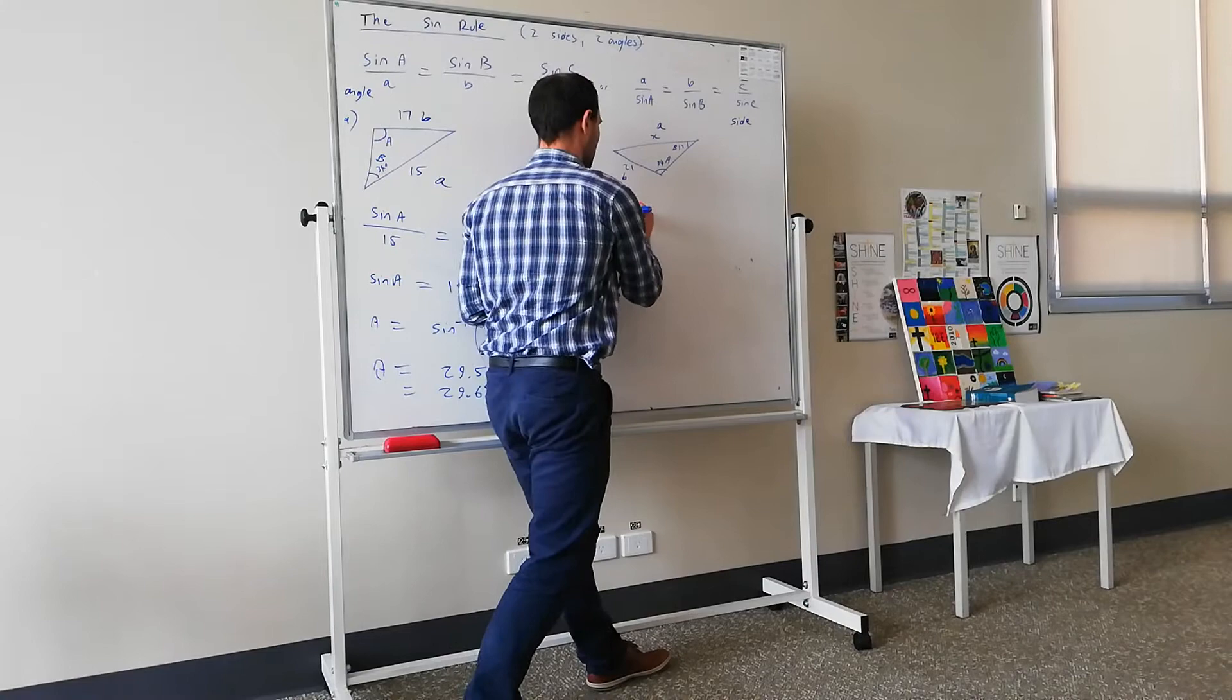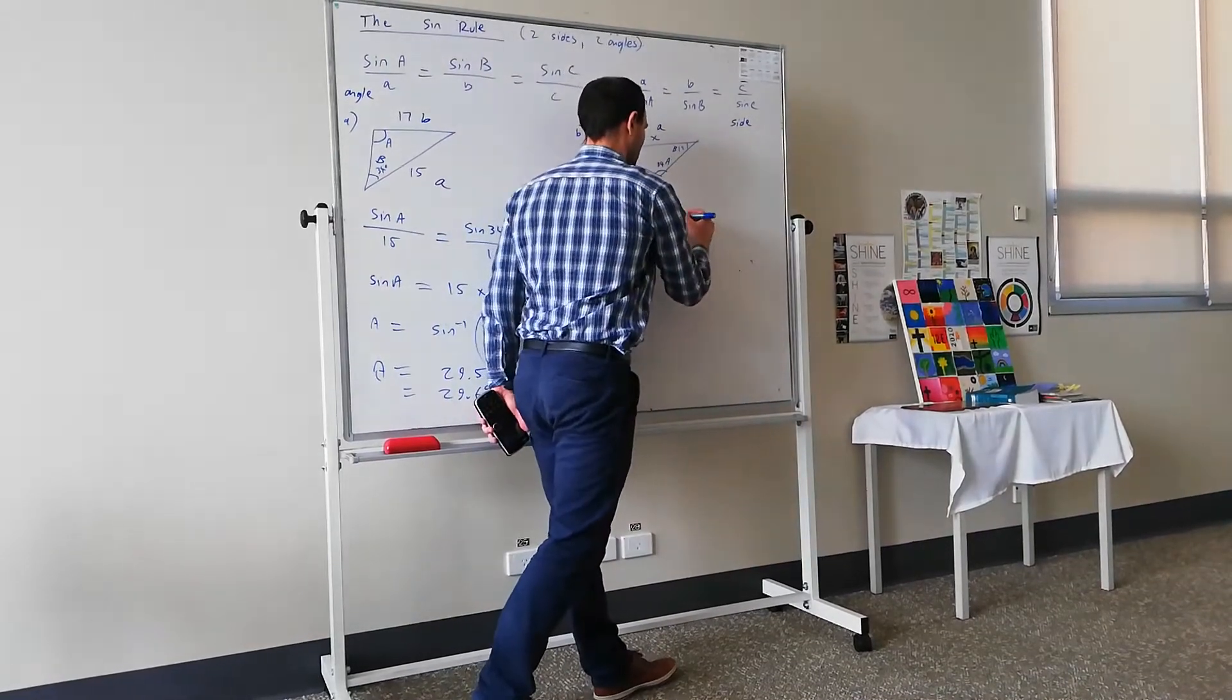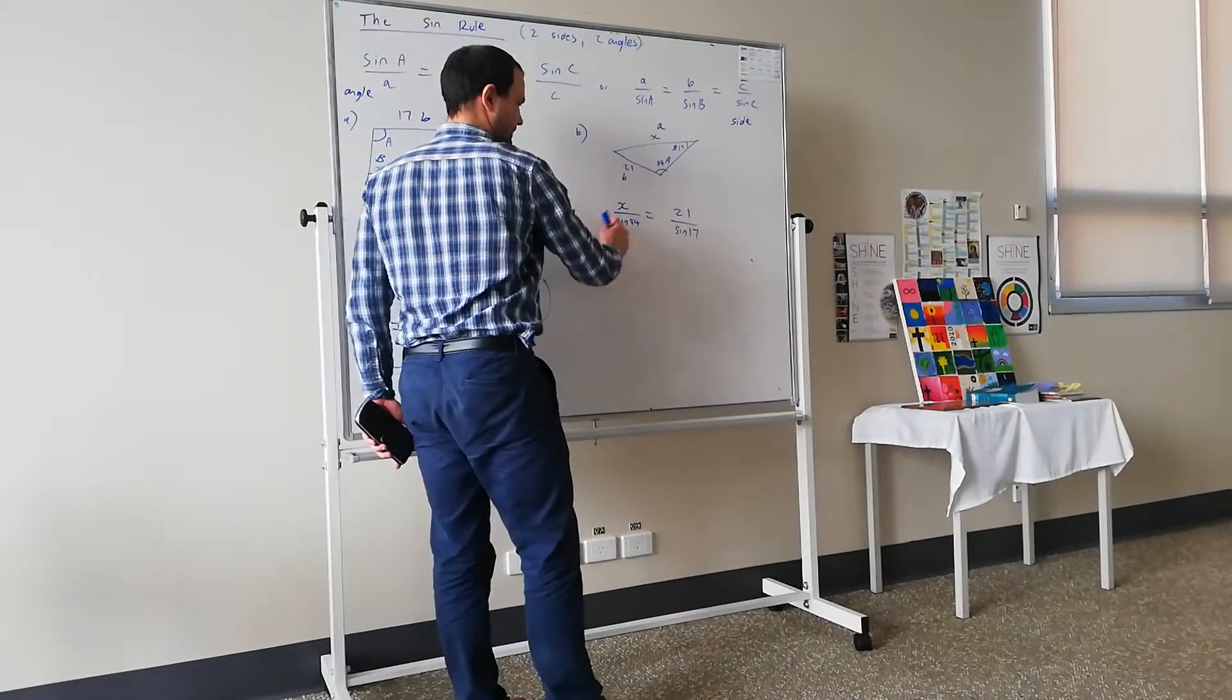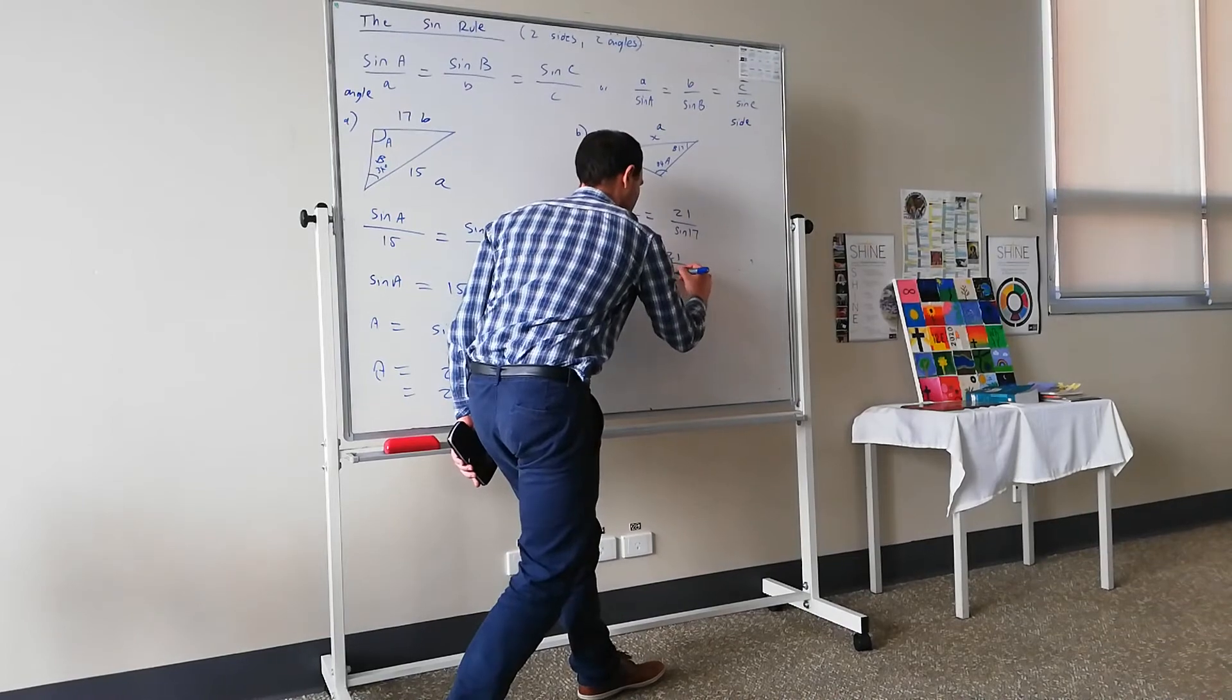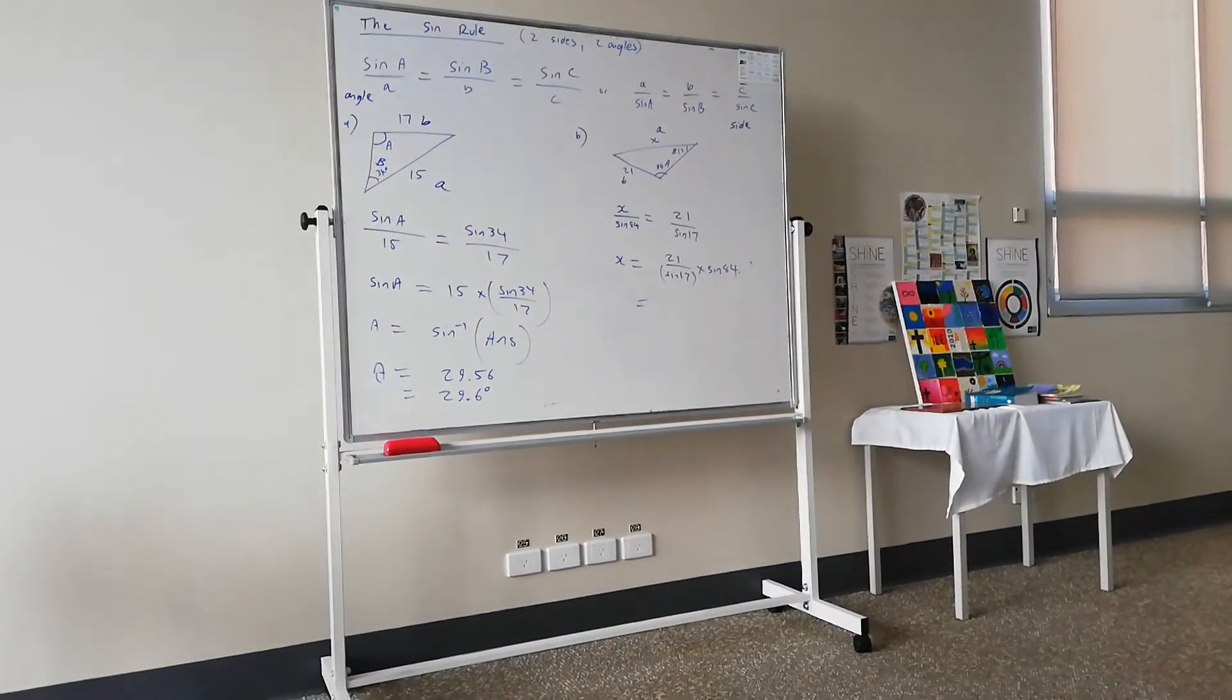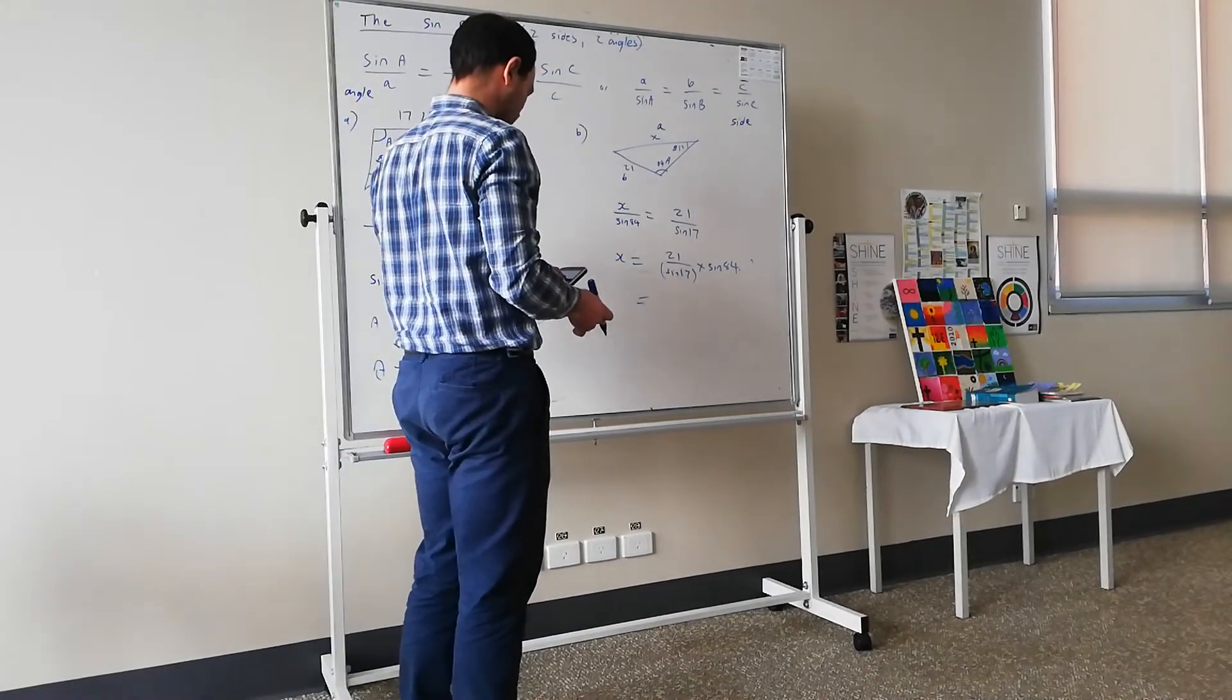We have X on top of sine 84 equals 21 on top of sine 17. Now we're trying to solve for X, which means we're going to multiply both sides by sine 84. We've got X is like that, and then times sine 84. And that's what we'll crunch. 71.43.